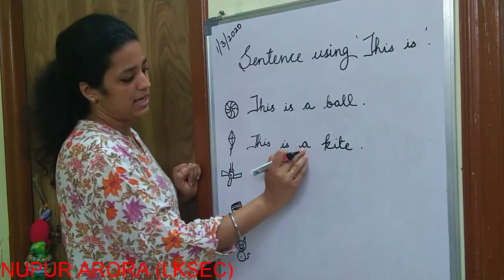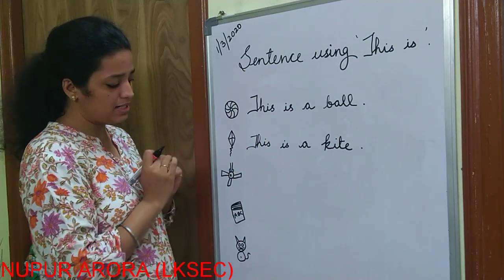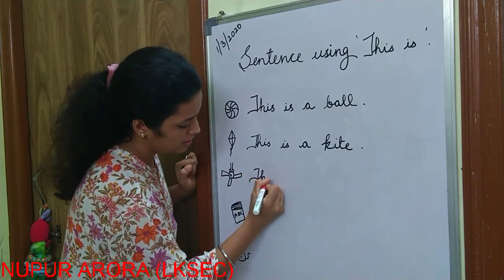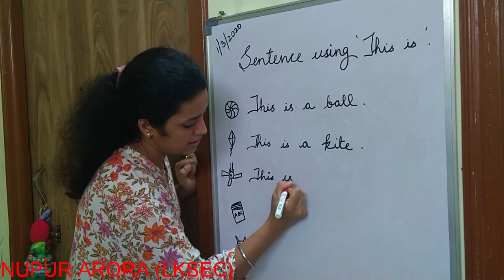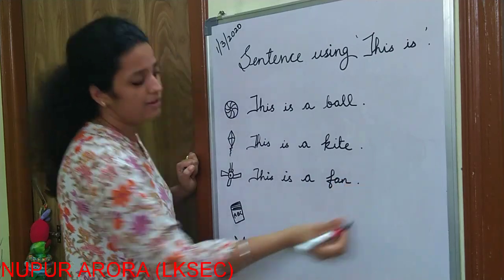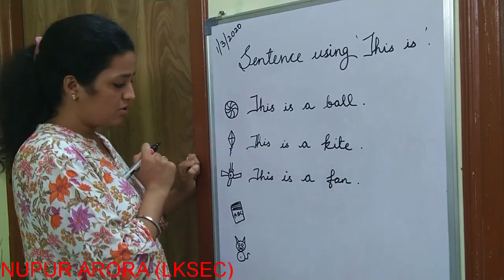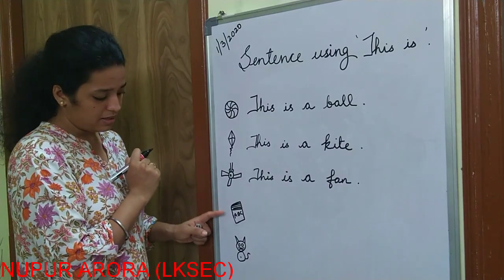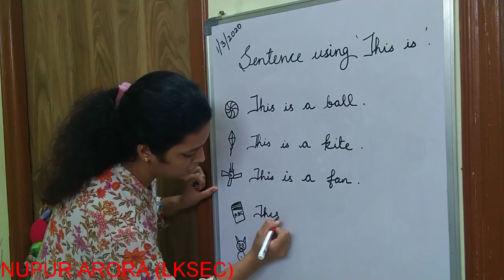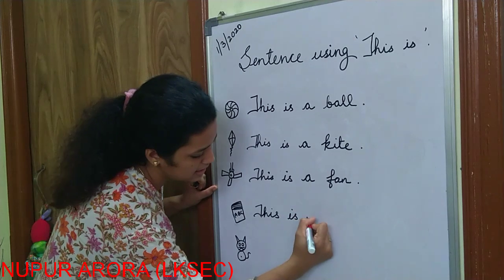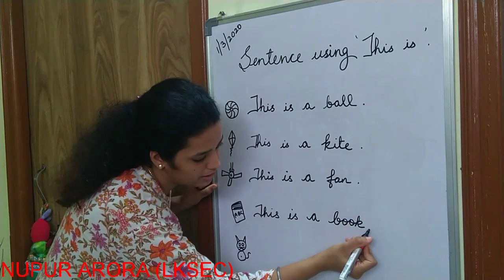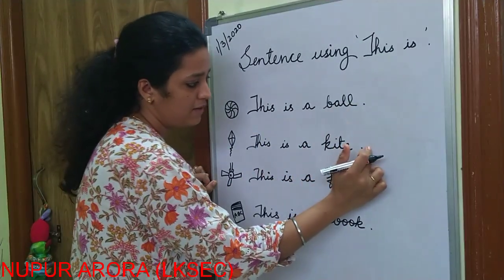And just you have to learn the spelling of this is A, you know this kite, this is a kite. Now what is this, fan, you all know. So what you will write here is T-H-I-S this, is A, fan, this is a fan. Again next is book, this is a book, this is a book. So what you will write and you know the spelling of book also, T-H-I-S this is A book. What is the spelling of book is B-O-O-K and a full stop.